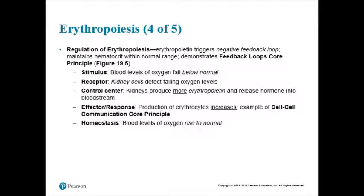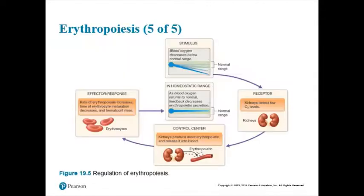So when your oxygen levels drop, cells in the kidneys notice. Kidneys release erythropoietin that stimulates erythropoiesis so you make more red blood cells and can carry more oxygen again. Now you know how to make a red blood cell, what it looks like, and how to regulate it.